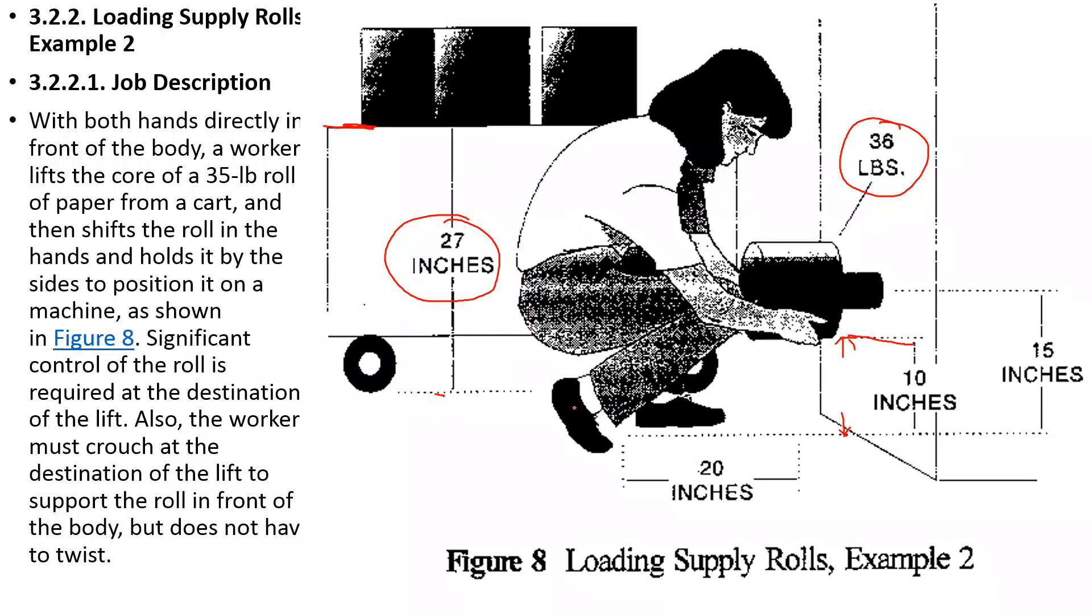Now, look at this horizontal distance at the destination. You draw an imaginary line between the ankle to ankle joint, and then draw a line. This is where the horizontal distance should be measured to the knuckle.